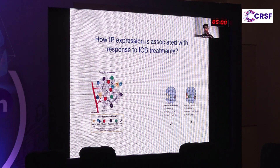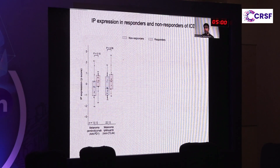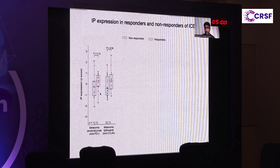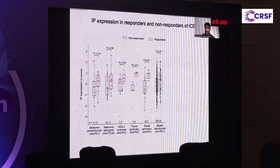We then asked how this is associated in the context of immune checkpoint treatments. We looked at constitutive and immunoproteasome expression levels in patients who responded versus did not respond to immune checkpoint therapies. In melanoma, as shown previously, responders — highlighted in the pink box plot — have higher immunoproteasome expression compared to non-responders. To our surprise, other tumor types that showed good prognosis for standard of care treatment also showed good association for immune checkpoint therapies.